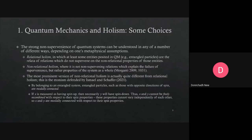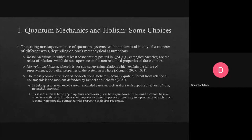We want to talk about the monist alternative, and in particular about the Chakravartty paper that Matteo mentioned. The thought is that if we have a system with entangled particles — using that terminology for purposes of presentation — our toy example will be two electrons in the singlet state with opposite directions of spin. One of the points that Ismael and Schaffer really stress is the idea that entangled particles are modally connected, which is to say that if one of those measures has spin up then necessarily the other will have spin down. The two electrons X and Y cannot be freely recombined with respect to their spin properties; these properties cannot vary independently of each other. That's what we mean by modal connection here.